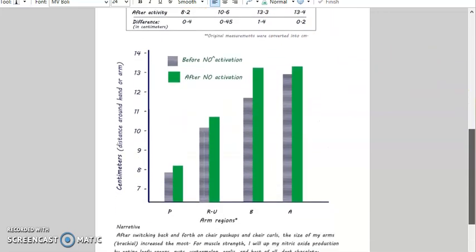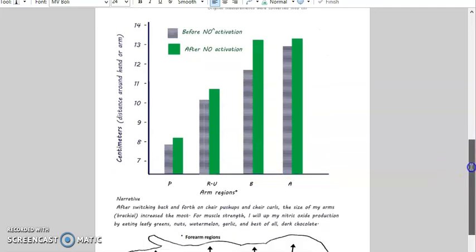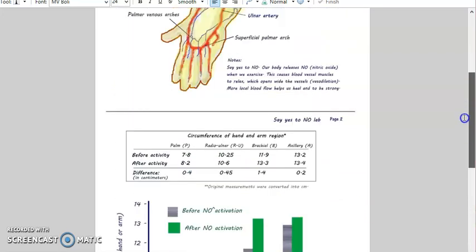When I charted it, it looks something like this: my palm, forearm, my brachial, and my axillary. Now whenever we do a chart like this, we always have to clarify because what if I hand this chart off at the end of my shift? The next person has to know what does P mean? P means palmar, or means radial/ulnar, and so forth. I did a narrative on this part—talked about how our body releases nitric oxide when we exercise.